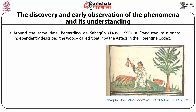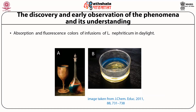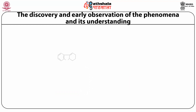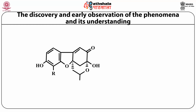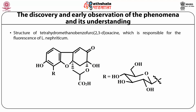Around the same time, Bernardino de Sahagún (1499–1590), a Franciscan missionary, independently described the wood called Coetilis among the Aztecs in the Florentine Codex, mentioning that the plant makes water turn blue and its juice is medicine for the urine. It was observed that the fluorescence and absorption colour of the infusion of L. Nephretum changed with pH — in mildly alkaline aqueous solutions the blue colour appeared, and when made acidic, it disappeared. The compound responsible for the blue effect was later isolated as tetrahydro-methanobenzofuro-oxacine.